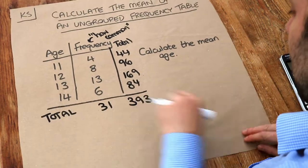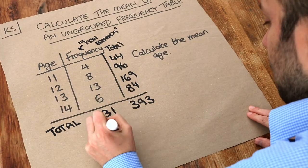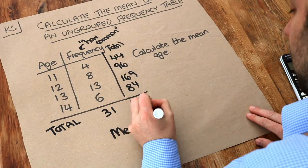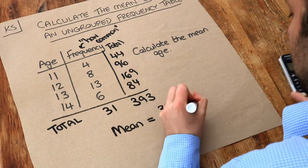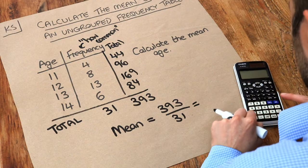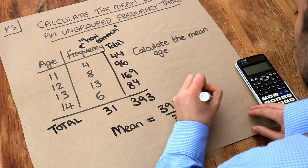So then the mean age is just going to be the total of everyone's age which is 393, divided by how many people there are, 31. And that gives us 12.7.